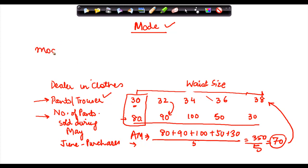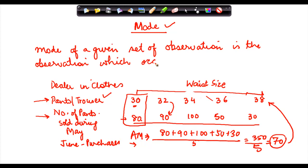Mode of a given set of observation is the observation which occurs the maximum number of times.